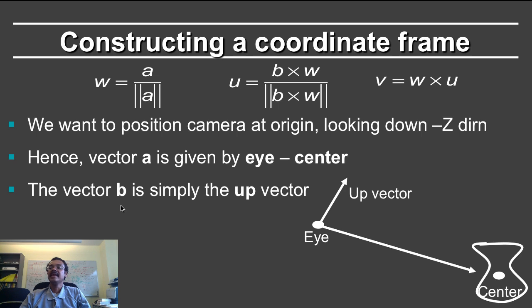The vector b is then simply the up vector. And those are your two vectors a and b, eye minus center and up.